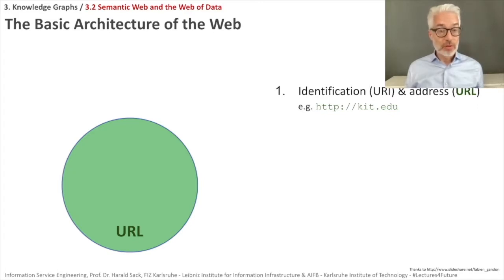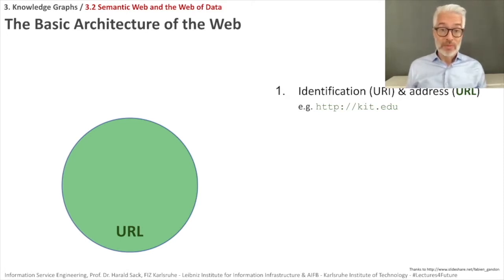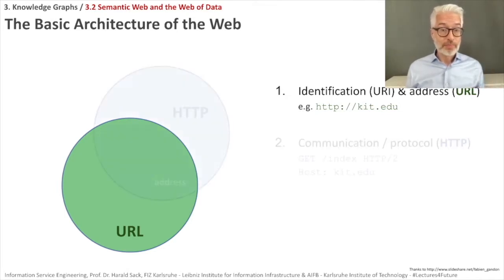First, let's recapitulate the web — the World Wide Web that we all know. What's the basic architecture of the web? First, you need to identify things on the web. Usually it's documents, HTML documents or something like that. For identification, we use so-called URIs or URLs — URIs are Uniform Resource Identifiers and URLs are Uniform Resource Locators. The URI or URL are the basic means of identification and reference in the web.